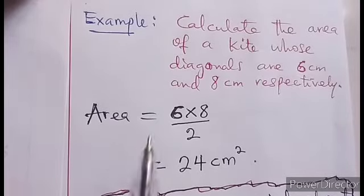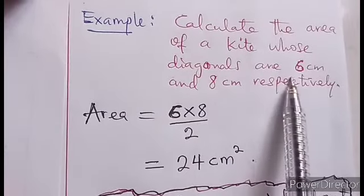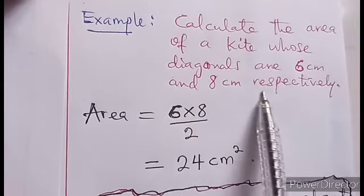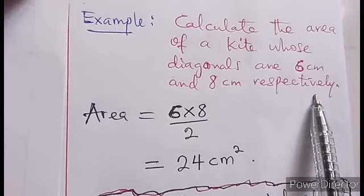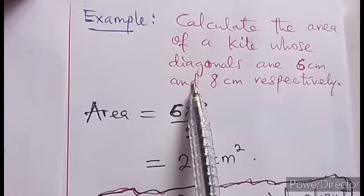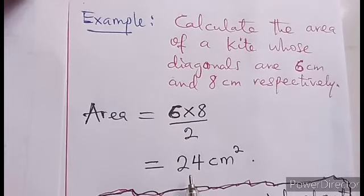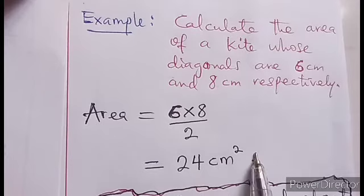Let's take an example. Calculate the area of a kite whose diagonals are 6 cm and 8 cm respectively. So d1 is 6, d2 is 8. So 6 times 8 divided by 2, and that will be 24 cm squared. It's as easy as that.